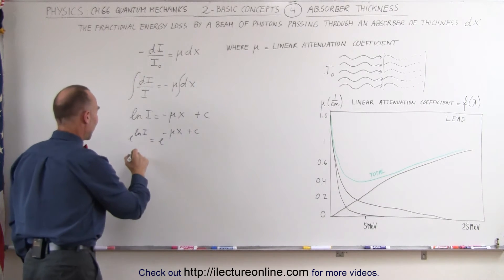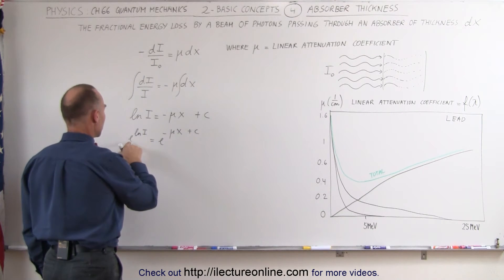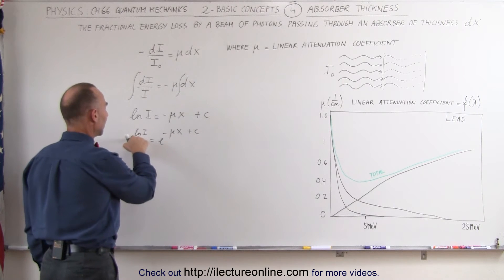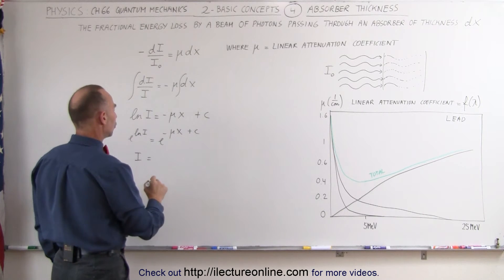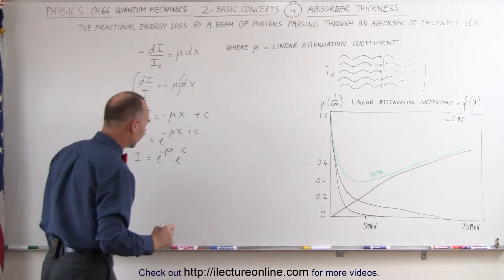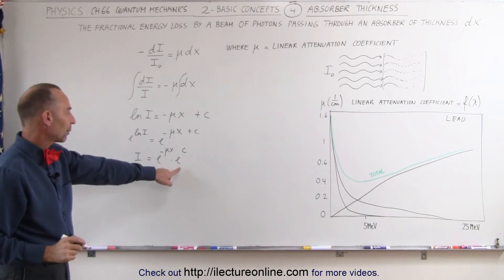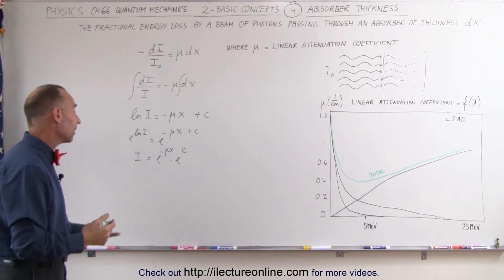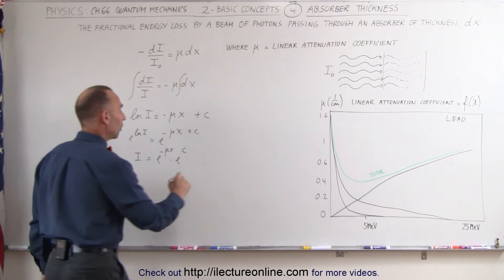And then we can write this as I, because the e cancels out the natural log of I, is equal to e to the minus μ times x times e to the constant. Now we want to figure out what e to the constant is, and that makes a lot of sense when you think about it this way.